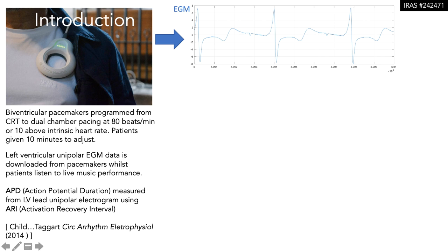Which is the time from the point of steepest descent of the QRS electrogram to the time of the steepest ascent of the T wave. The sequence of three ARIs shown here is part of a larger ARI time series extracted from the electrogram.